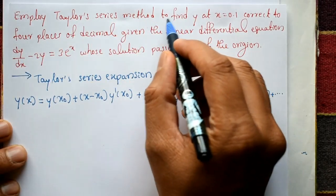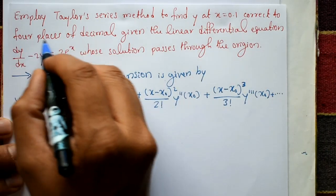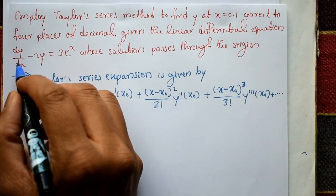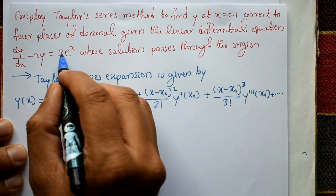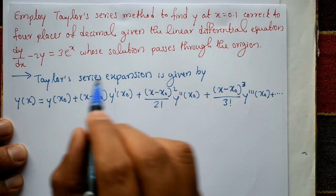Employ Taylor series method to find y at x equals 0.1 corrected to 4 decimal places. Given the linear differential equation dy/dx - 2y = 3e^x whose solution passes through the origin.